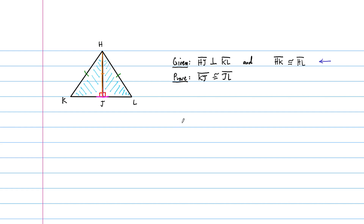That's the hypotenuse-leg property, which gives us that these two smaller triangles are congruent. Once we know they're congruent, we'll get our end result: showing that KJ is congruent to JL. That comes from corresponding parts of congruent triangles — CPCTC. So that's our planning phase. In the book it says to write down the given, the proof, draw a picture, plan it out, and then actually do it. We've completed the planning phase and are ready to write the formal proof.